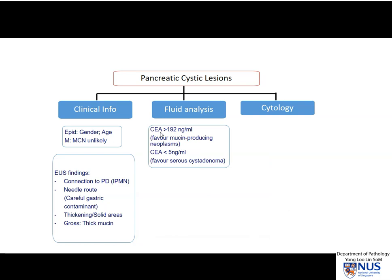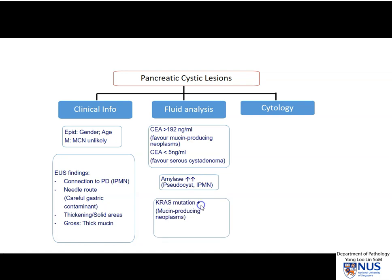For fluid analysis, we can do CEA, and a higher level would be associated with a higher chance of a mucin-producing neoplasm, whereas if it's very low, you might get this finding in a serous cyst adenoma. Amylase is also useful to look at, but it's not always conclusive or specific. And the presence of a KRAS mutation also indicates a very high likelihood of a mucin-producing neoplasm.